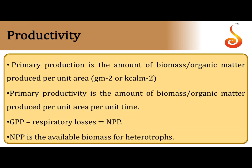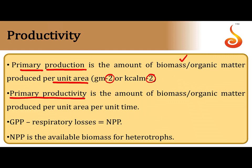Moving on to productivity, we first consider primary production: the amount of biomass or organic matter produced per unit area, expressed as grams per meter squared or kilocalories per meter squared. When we attach the rate — that is, per unit time — it becomes primary productivity. Primary productivity is the amount of organic matter produced per unit area per unit time.